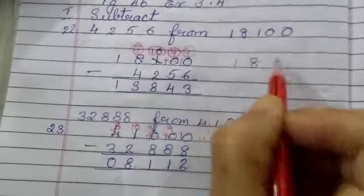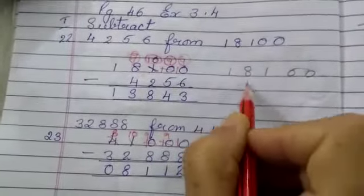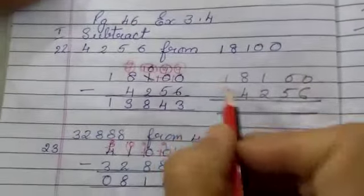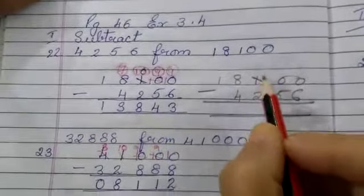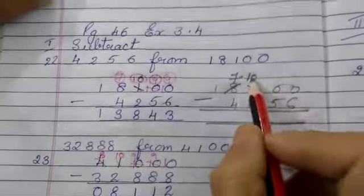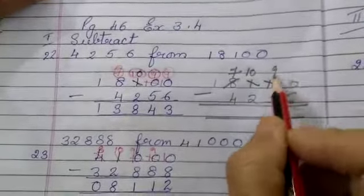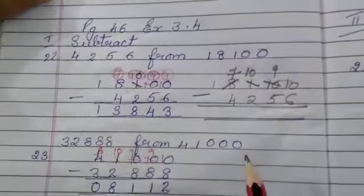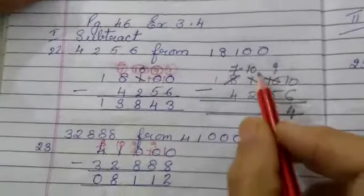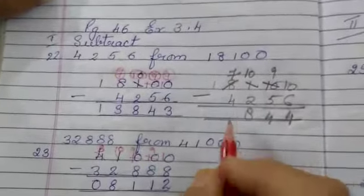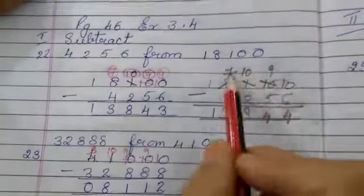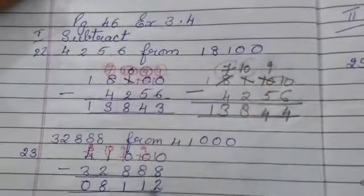Suppose this is 18,100 minus 4,256. Now we can't subtract from 0, so what we do is we borrow from here. This will become 0. We borrow and make this 10. This becomes 7. Now from here we borrow and make it 10, and this becomes 9. We borrow 1 here. Now 10 minus 6 is 4, 9 minus 5 is 4, 10 minus 2 is 8, 7 minus 4 is 3 and 1. So we got the answer. We have borrowed the numbers and we have got the sum.